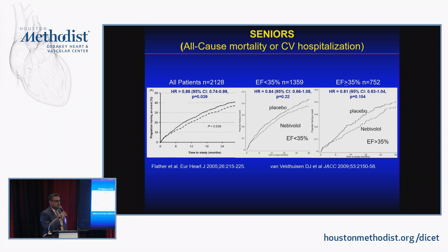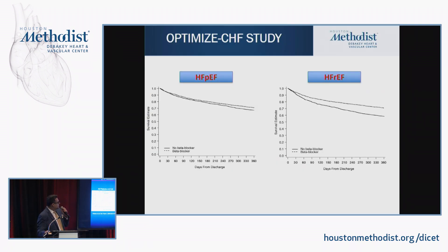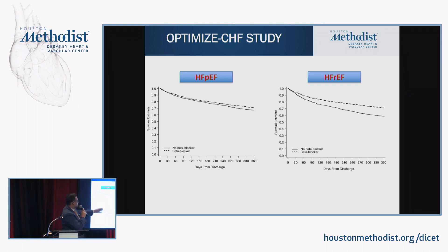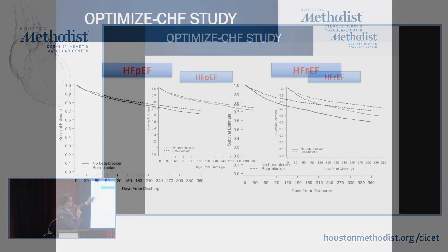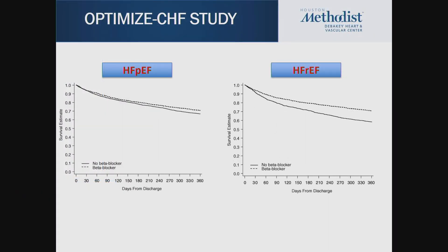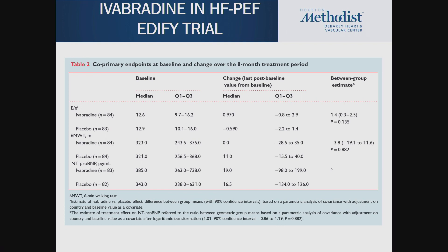The OPTIMIZE-CHF study, an observational study, looked at HFrEF versus HFpEF patients discharged home on beta blockers. If you were discharged home on a beta blocker, there was no survival benefit in the HFpEF group — consistent with what the SENIORS trial and other beta blocker trials have shown.